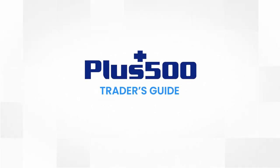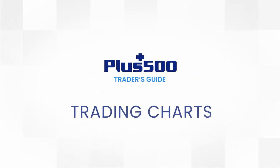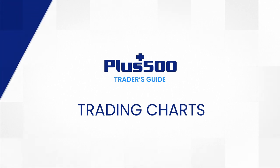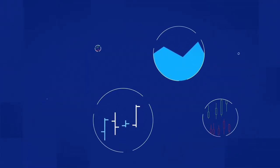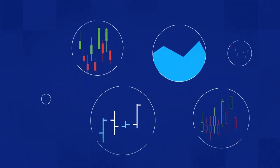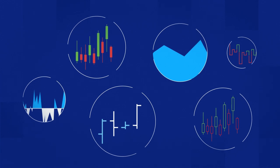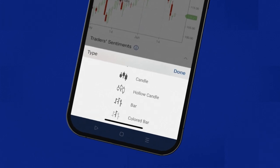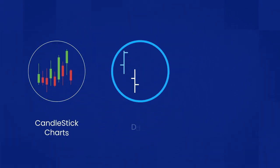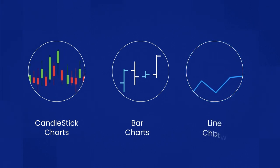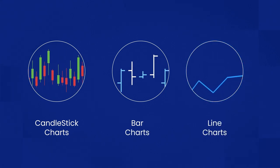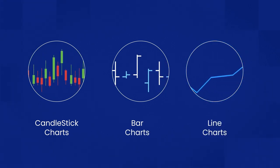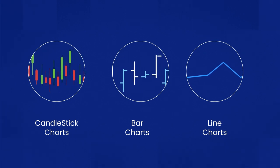In this video we're going to talk about trading charts. PLUS500 offers over 10 types of trading charts that cater to the different trading styles and needs of its users. We will focus on the three most popular charts among traders: candlestick charts, bar charts, and line charts — all of which traders can refer to in order to assess future price movements based on the past.